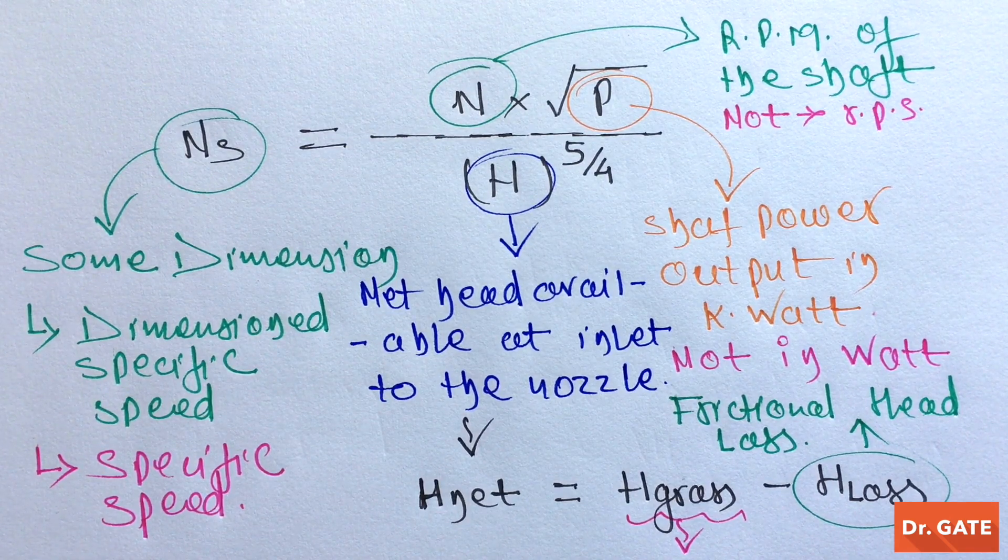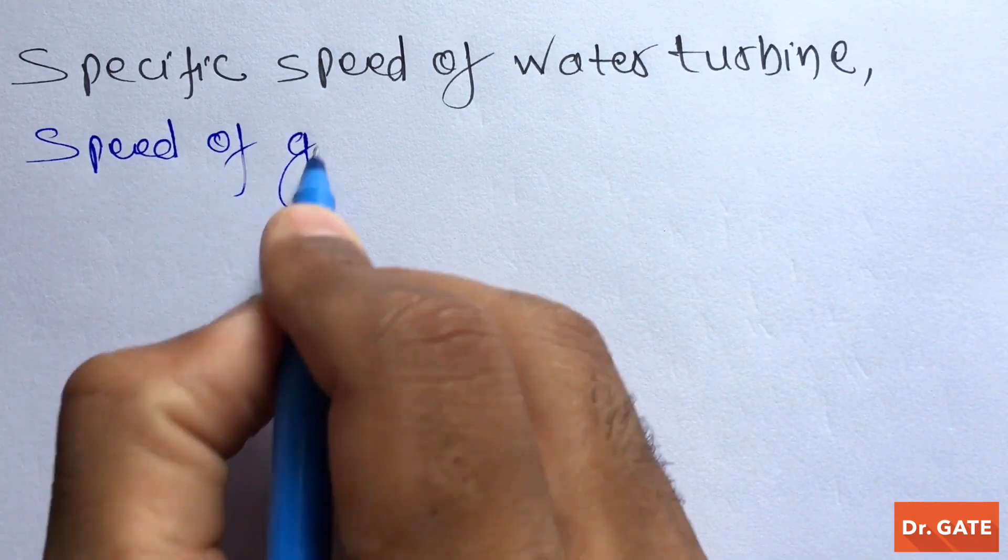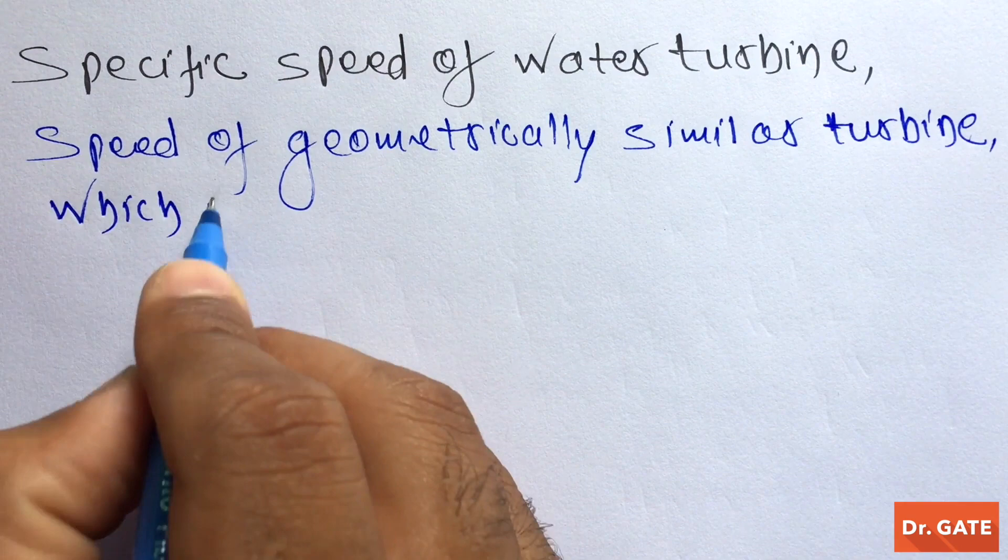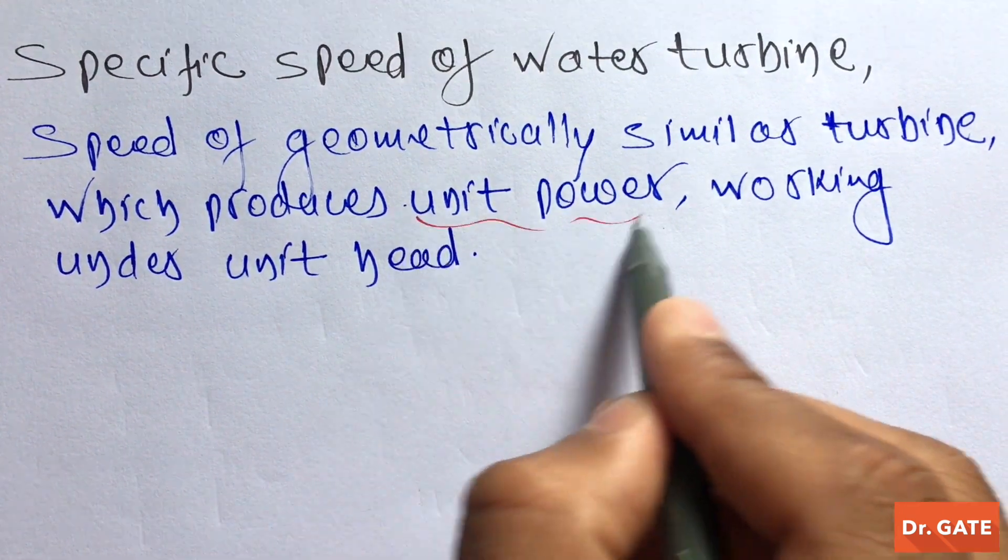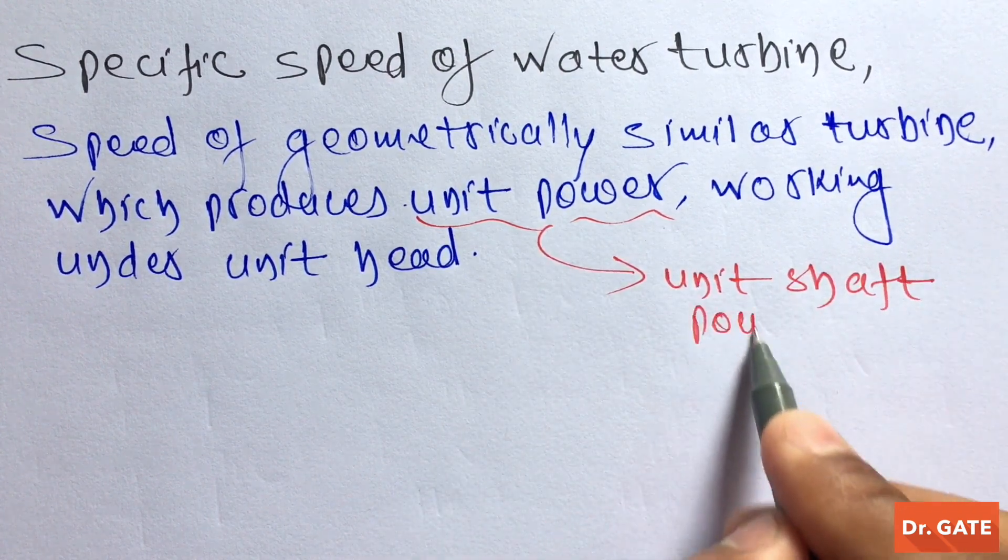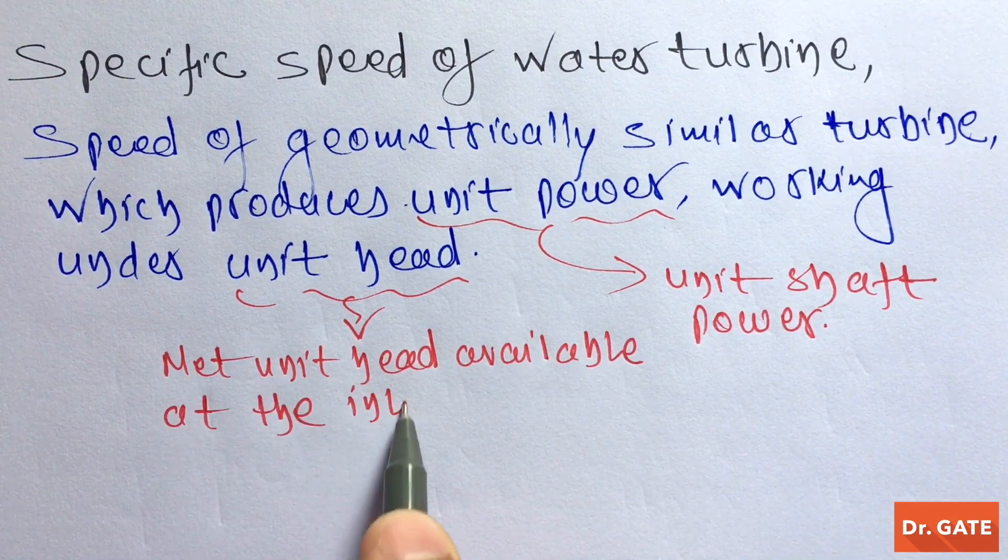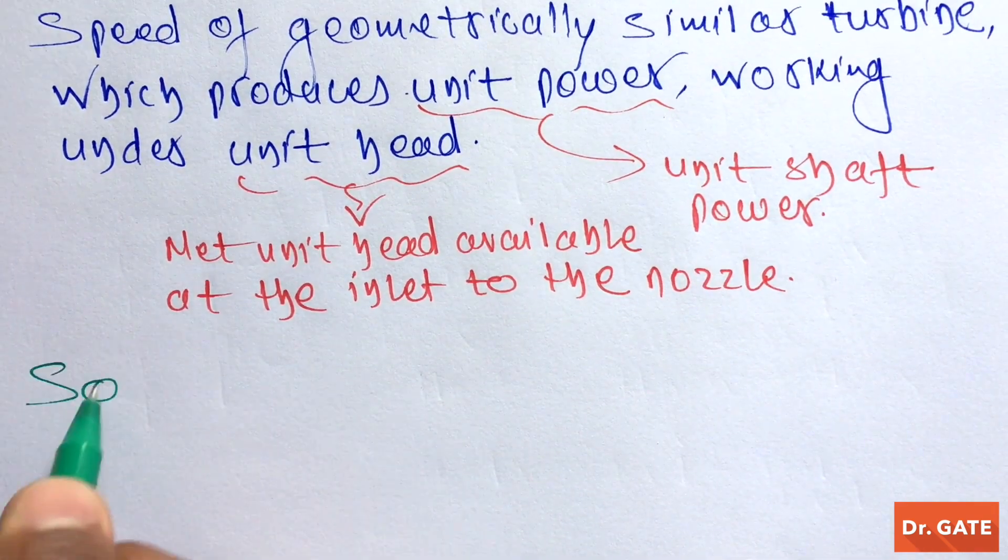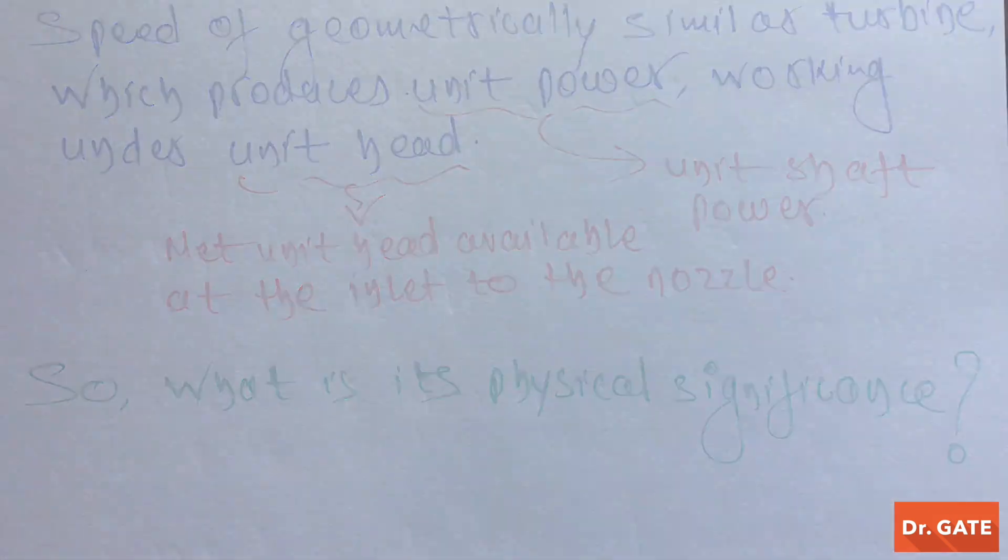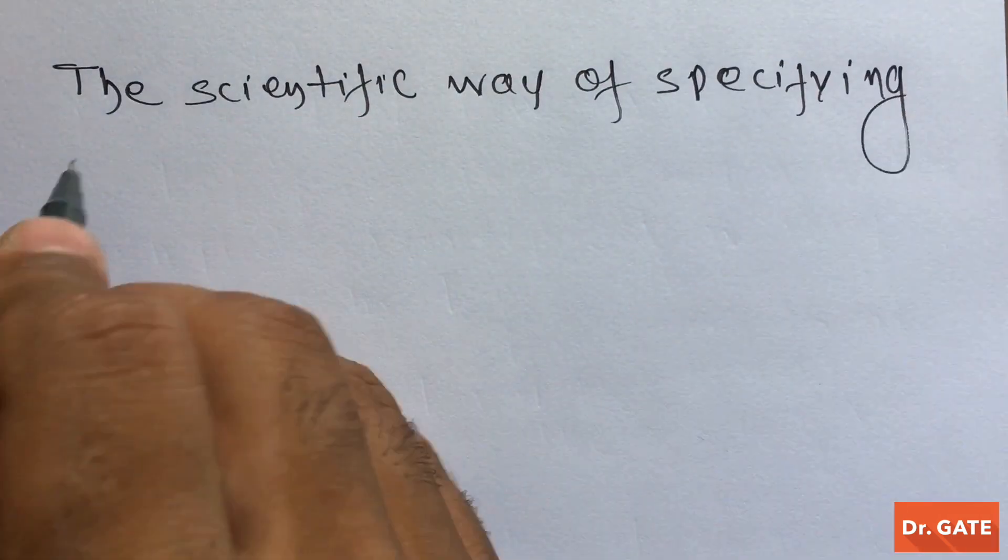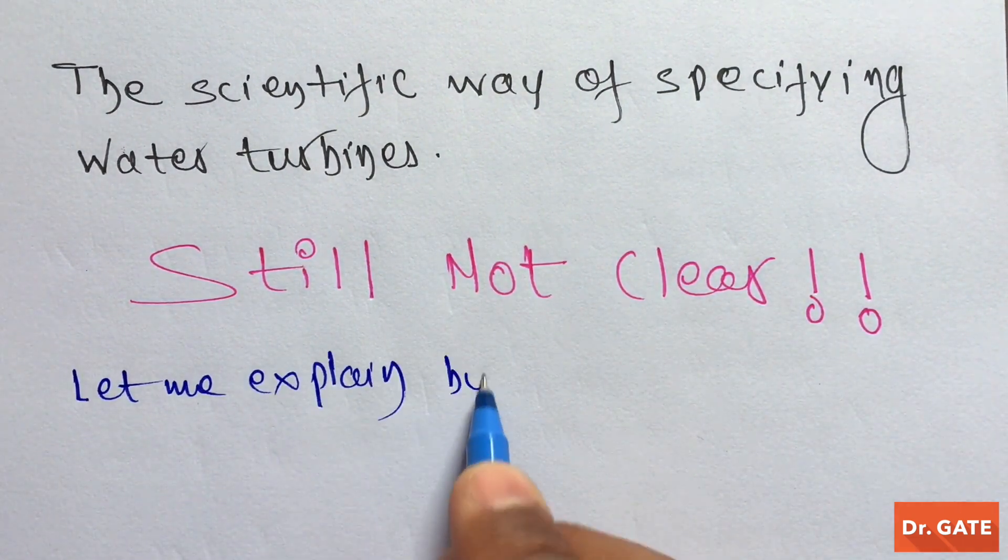By observing this equation, now we can define specific speed of water turbine as: Speed of geometrically similar turbine which produces unit power working under unit head. Where this unit power is unit shaft power, and this unit head is net unit head available at the inlet to the nozzle. So, what is its physical significance? As I earlier said, it is the scientific way of specifying water turbines. Still not clear? Let me explain you by an example.